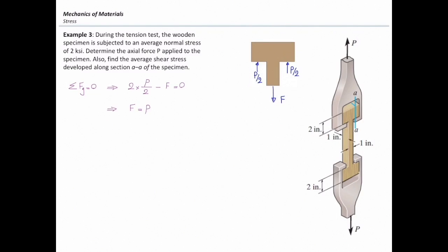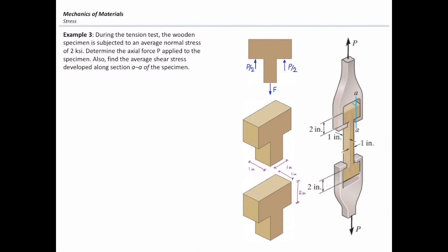This step is very important. How to make our element free. Now, let me answer the first part, the first question. I drew this element in a three-dimensional shape. Let me first see how much is the total P if the stress developed in that section is 2 KSI.